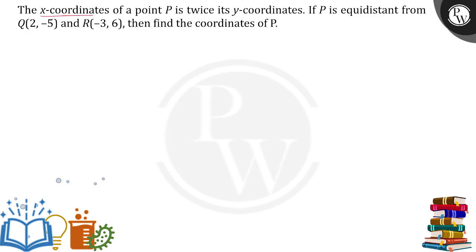It was given that the x-coordinate of the point P is twice its y-coordinate. Let's suppose P point is (x, y). It was given that x is equal to 2y, then the P point will be (2y, y).